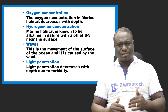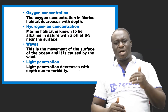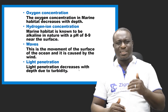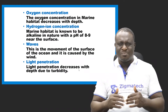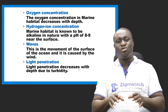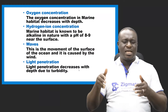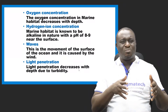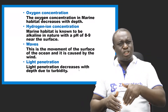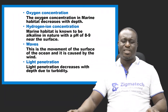There is also the presence of waves in marine water habitat. Light penetration decreases with depth due to turbidity. Turbidity is the degree of transparency of a solution — in marine water habitat, turbidity increases with depth, so light penetration decreases with depth.